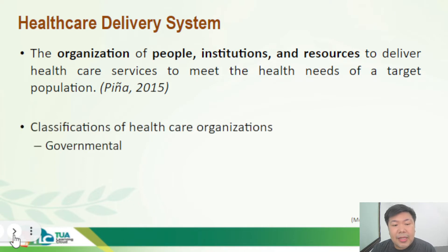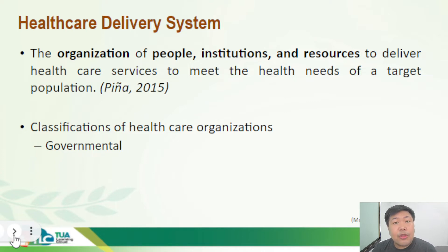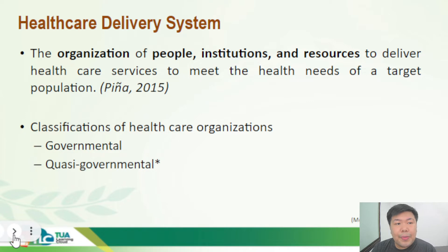First is governmental — a system that is part of the government structure, whether federal, state, democratic, tribal, territorial, or local. They are usually funded by taxes of the people and have authority over some geographic area. The WHO and the DOH are some examples of governmental health care delivery organizations.